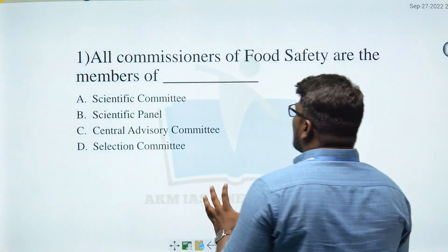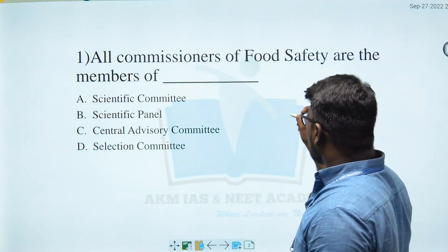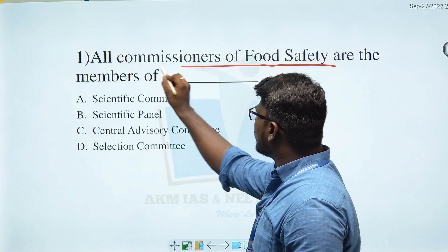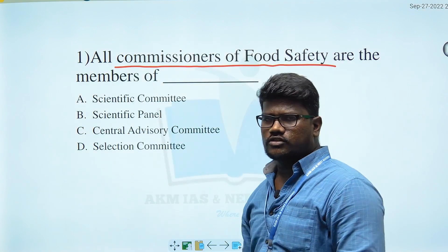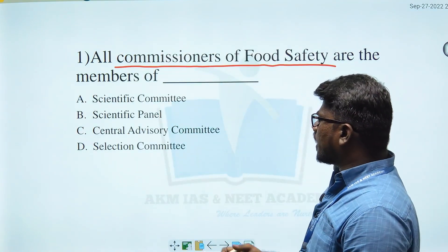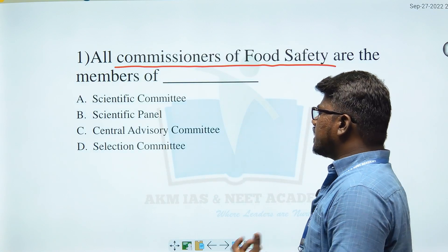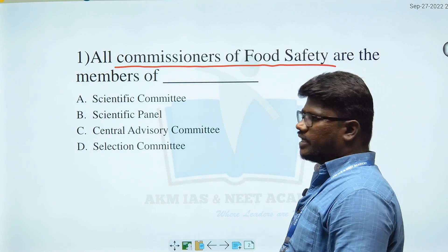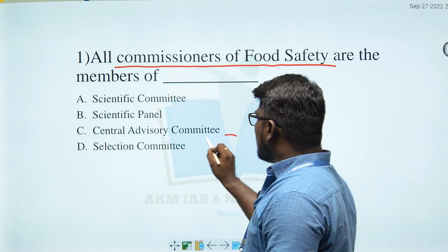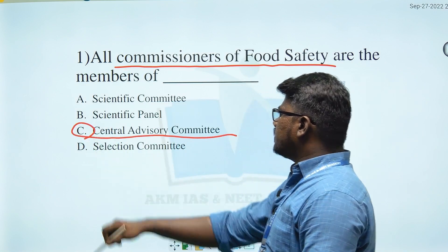Question 1: All commissioners of food safety in one state — who are all food safety commissioners members of? Options: A) Scientific Committee, B) Scientific Panel, C) Central Advisory Committee, D) Selection Committee. Option C is the right answer: Central Advisory Committee.